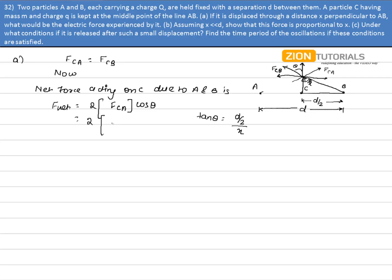So 2 times K into Q into Q divided by the distance between charge C and B. That can be given by D by 2 whole square. This is my X, so by Pythagoras theorem I can easily calculate the hypotenuse of the right angle triangle that is given by D by 2 whole square plus X square to the power 1 by 2. That is my distance R.